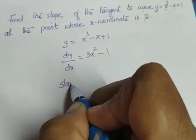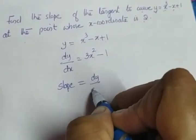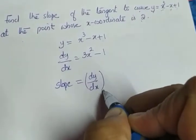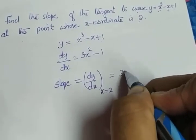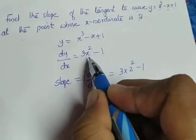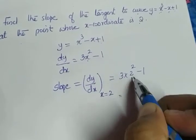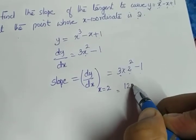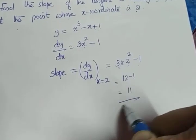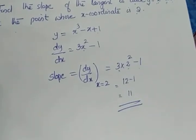Again, we need to find the slope. We have to find dy/dx at x coordinate is 2, means it is x equal to 2. So 3 into 2² minus 1, here instead of x replaced by 2. So 2² is 4, 4 into 3 is 12, 12 minus 1 which gives you the answer as 11. So the required slope is 11.